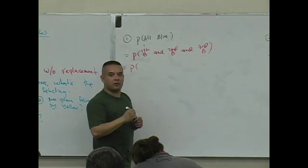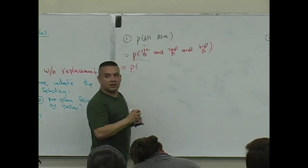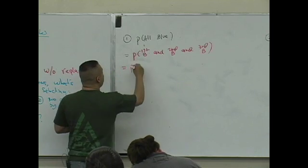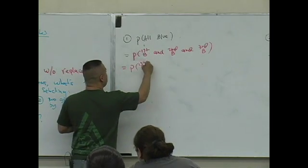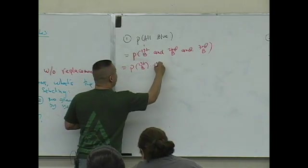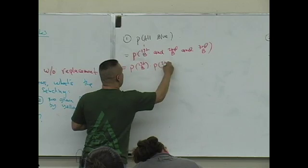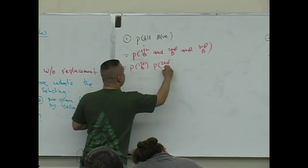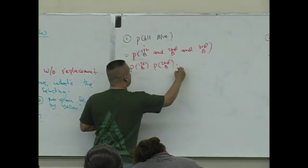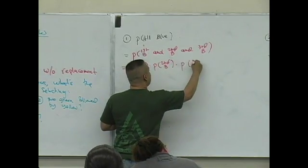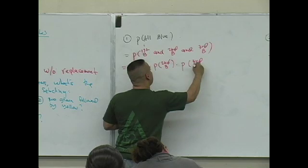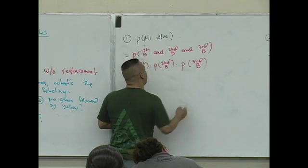Is that true? So that means this is probably the probability that the first is blue, times the probability that the second is blue, times the probability that the third is blue.